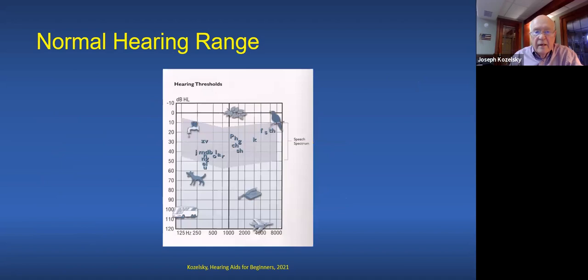Deafness is typically defined as 90 to 95 dB or poorer and means no usable hearing for communication by speech. Here's a display audiogram showing the normal range of hearing — from minus 10 all the way down to 130 decibels. Decibels are on a log scale, so each 10 dB value is 10 times the previous value — a tremendous increase in power as you go down the scale.